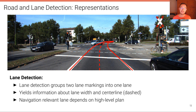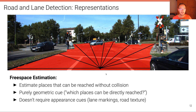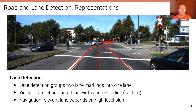Another representation is the lane itself. Lane detection algorithms group two lane markings — the left and right lane marking of the ego lane — into a single lane, providing information about lane width and the center line, which can be used for navigation. The navigation-relevant lane also depends on the high-level plan, as there could be multiple lanes: one going straight, one going left, and one going right.